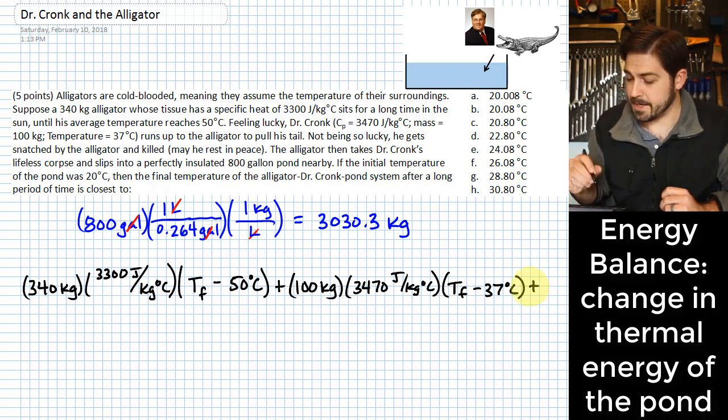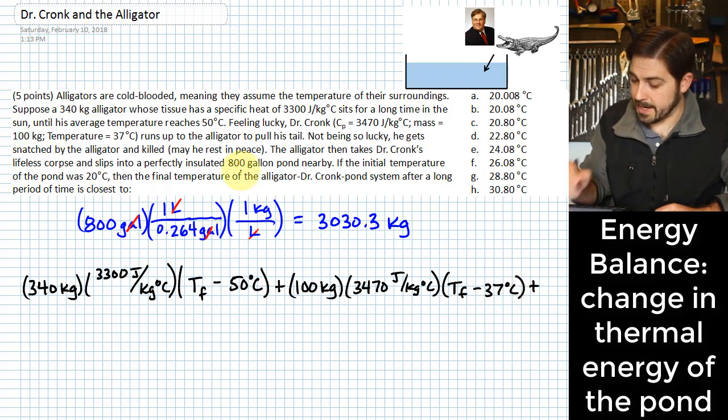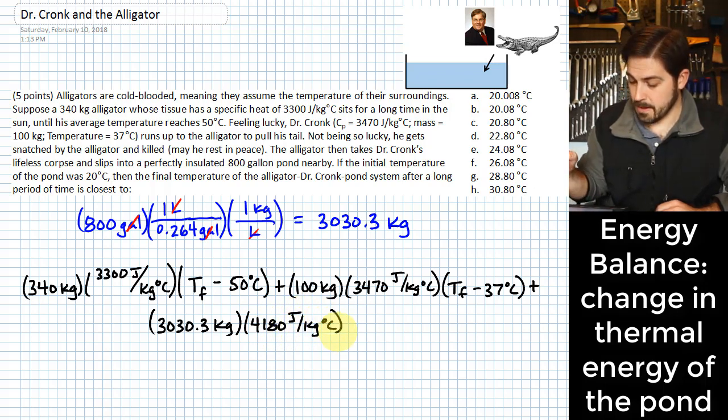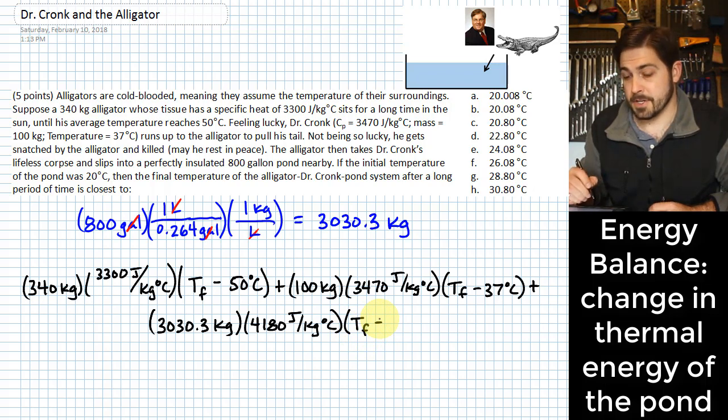To this, we are going to add the change in energy that is in the pond. So in the pond, we had 800 gallons, and we just converted that to kilograms. We know that the specific heat value for water is 4180 joules per kilogram degree C. And the change in temperature in the pond is, again, the final temperature minus its initial temperature. And its initial temperature is given here with 20 degrees C.